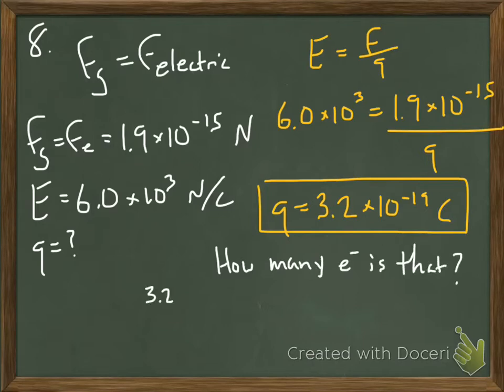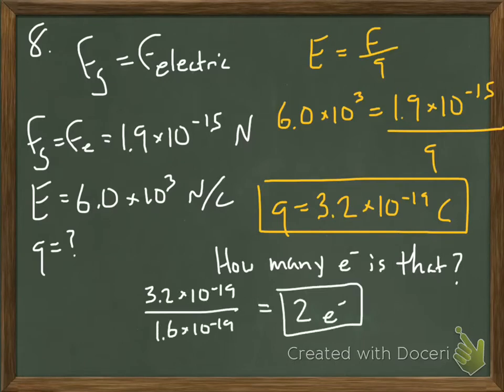Now the second part of the question is in essence asking how many electrons are we carrying. So normally an oil drop would have zero excess electrons. It would have a net charge of zero. But right now it doesn't have a net charge of zero. The net charge on our oil drop is 3.2 times 10 to the negative 19th coulombs.